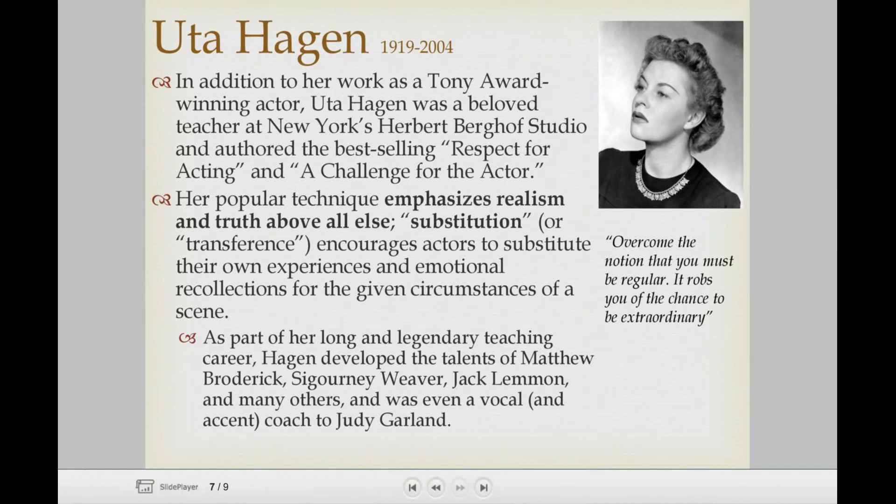The next person is Uta Hagen. Uta Hagen was a Tony Award-winning actor. She did not study Stanislavski or Strasberg — she kind of developed her own thing. What she did is emphasize realism and truth above everything else. She encouraged something called substitution or transference: you take your own experience and emotional recollections for the circumstances of a scene. For example, if you are in a scene where a character has just died and you're discussing that death, you channel your own experience and go back to a time in your life when someone or even a pet has died, and you try to put those emotions into your performance.